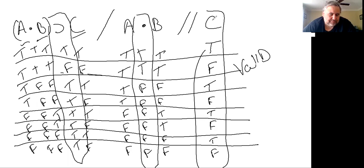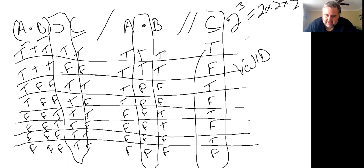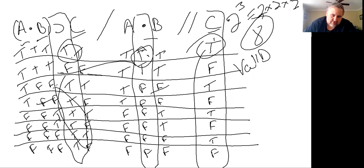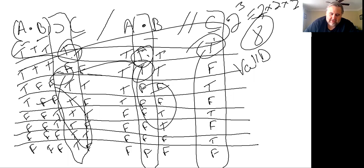Because of that, this one has three different propositions, three different letters — that's two to the power of three, which equals two times two times two, which equals eight. So this needs eight lines. That can be a lot of lines to do. What you're ultimately looking for is a line in which all the premises are true, to see if the conclusion is true or false. This one has the premises true and the conclusion is true, so it doesn't cause invalidity. There's no other line in which all the premises are true — there's really only one line that's even relevant for us to determine if it's valid or invalid.